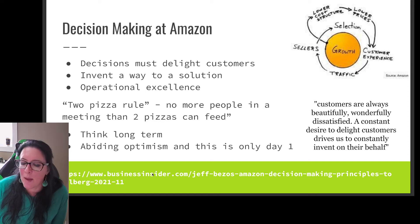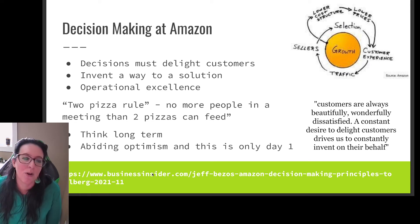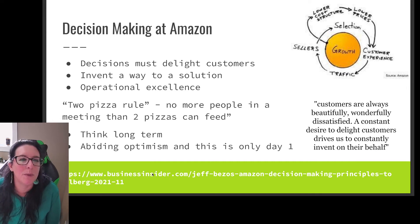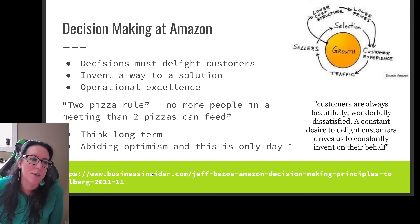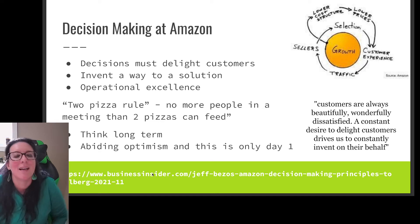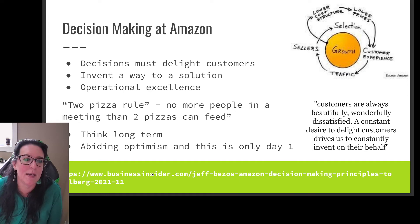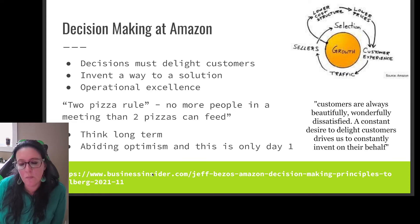Since we're looking at the decision making process, let's look at some of the guidelines Amazon sets for how they make decisions. Amazon's decisions must be to the delight of the customers — their comment is that customers are always beautifully, wonderfully dissatisfied, and a constant desire to delight customers drives them to constantly invent on their behalf. They want operational excellence, responsiveness, and quick effective decisions. Amazon has a two-pizza rule: your team cannot have more people in it than two pizzas can feed. They focus long term with abiding optimism, recognizing that decisions are only first steps they will build upon.